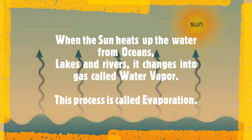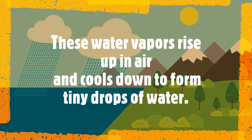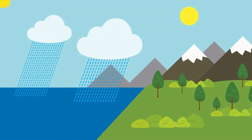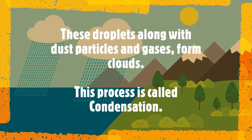it changes into a gas called water vapor. This process is called evaporation. These water vapors rise up in the air and cool down to form tiny drops of water. These droplets, along with dust particles and gases, form clouds.